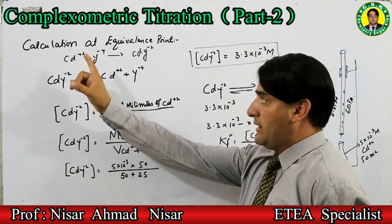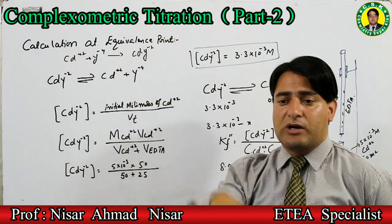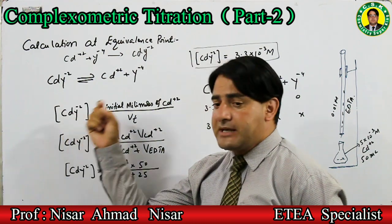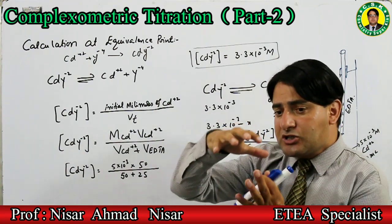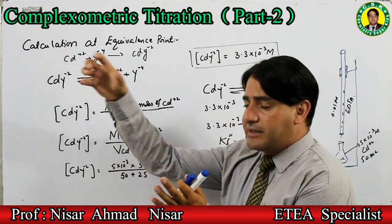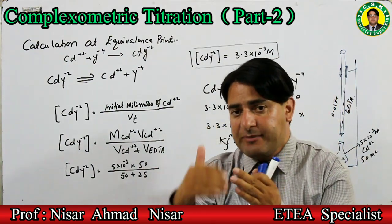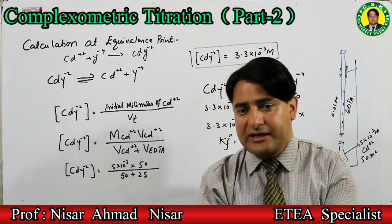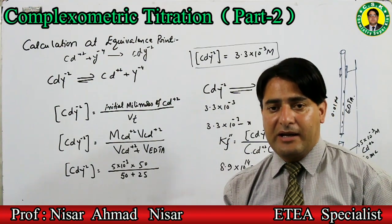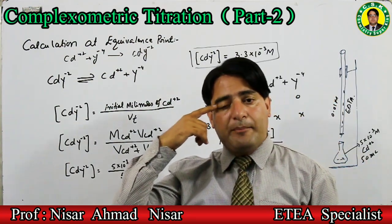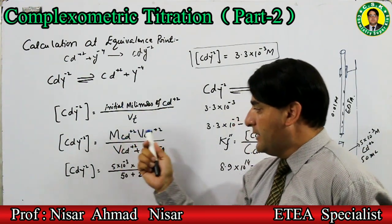Complex کتنا بنے گا؟ جتنے cadmium ion تھے وہ سارے کے سارے consume ہو کے complex بنائیں گے۔ Complex کی concentration برابر ہوگی initial millimol of cadmium ion divided by total volume۔ سارے cadmium ions نے EDTA سے react کر کے complex بنایا ہے۔ Initial millimol of cadmium ion = molarity of cadmium ion × volume of cadmium ion۔